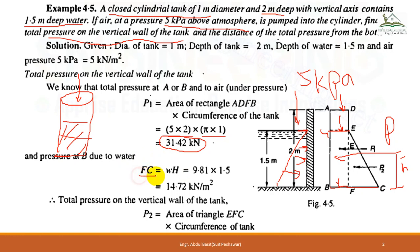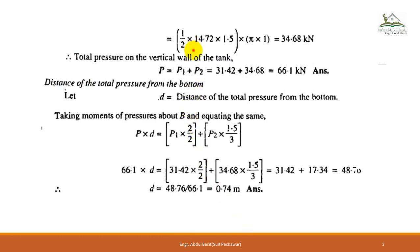fc is the maximum pressure equal to w·h. The area of the triangle gives P2, multiplied by the circumference of the tank to get total pressure on the whole circumference. So the total pressure P equals P1 plus P2.